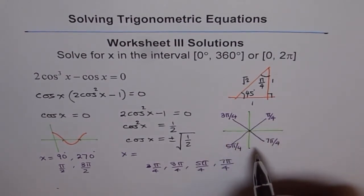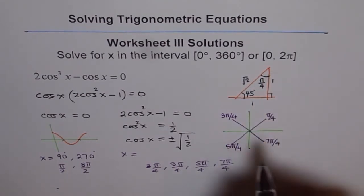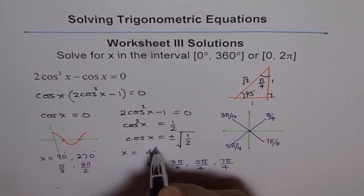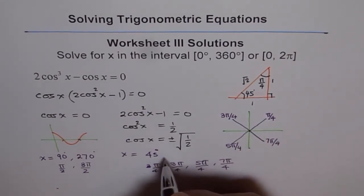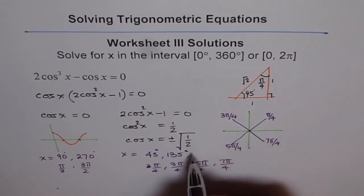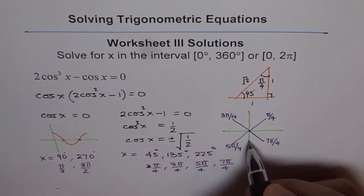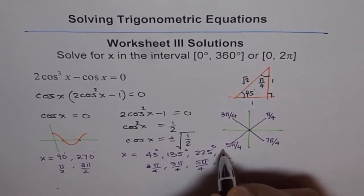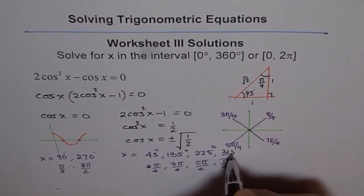You must list all possible solutions in your domain — that's very important. In degrees, the answers are 45 degrees, 135 degrees, 225 degrees, and 315 degrees. So the total solution set includes 90°, 270° from the first factor, and 45°, 135°, 225°, 315° from the second factor.